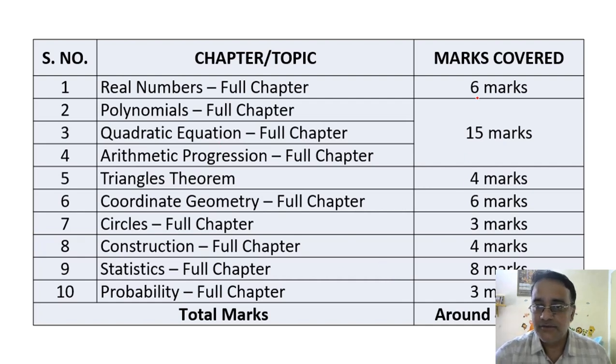So this is the structure of syllabus - six marks first chapter, and this unit 15 marks, Triangles theorem 4 marks, Coordinate Geometry 6 marks, Circles 3 marks (it may be 3 to 4 also), Construction 4 marks, Statistics 6 marks and Probability 3 marks, together 11 marks. So around 49 marks you can easily score out of 80 marks if you concentrate on this much syllabus only. Plus 20 marks internal, agar internal mein aapko 15 marks milta hai toh 49 plus 15 is 64 marks you can score easily.